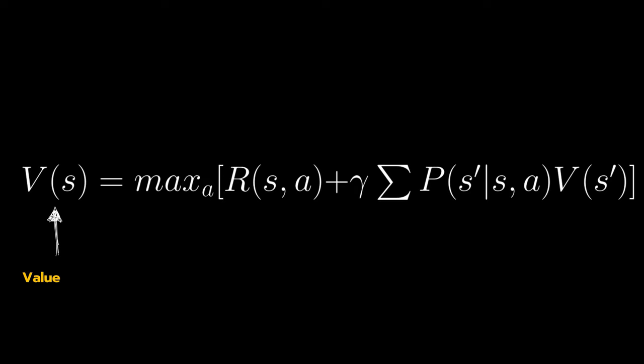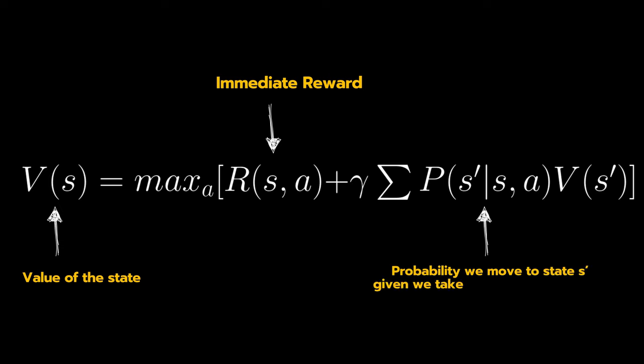This changes things because the value of a state is now not just the immediate reward plus the discounted value of a single next state, instead we consider the sum of the values of all possible states we might end up in, weighted by the probabilities of reaching each of them from our current state and action.